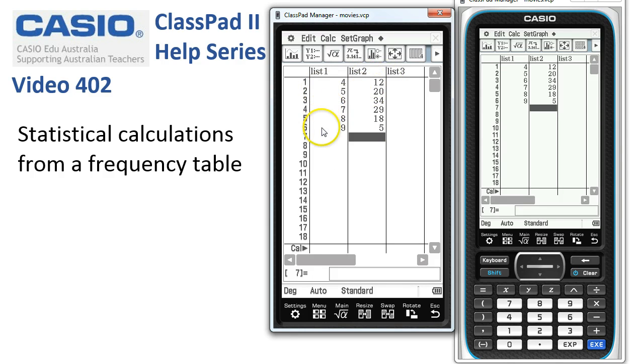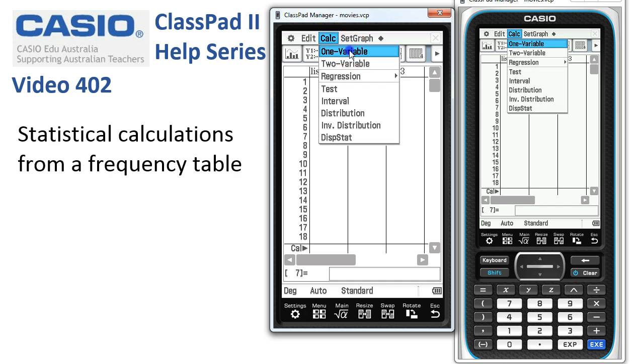To save a little bit of time, I've already put that data in. So when we're ready to go, we've got our variables in this and the frequencies in list two. So we're going to tap onto Calc, Single Variable, One Variable Calculations.